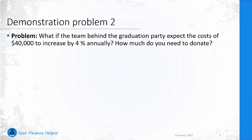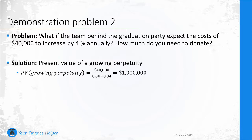For demonstration problem two: what if the team behind the graduation party expects the costs of forty thousand dollars to increase by four percent annually? How much do you need to donate then? This is a growing perpetuity. We use the growing perpetuity formula — we take our forty thousand dollar cash flow and divide it by the difference between our interest rate and our growth rate. This actually doubles the required investment; we need to invest one million dollars if you expect costs to increase by four percent annually and want forty thousand dollars every year forever.